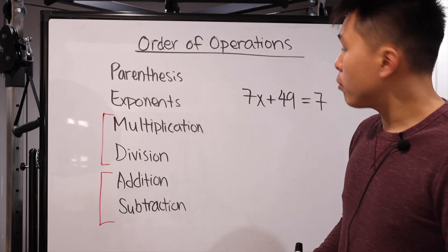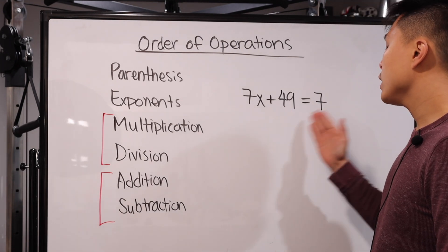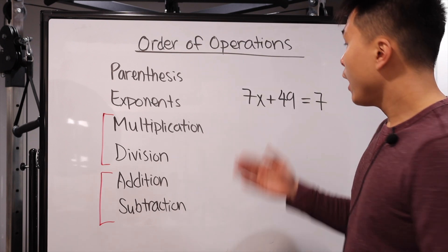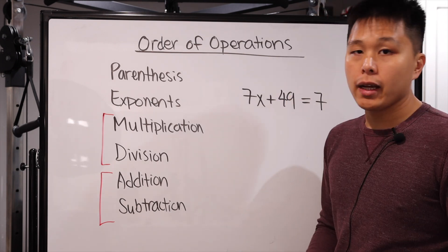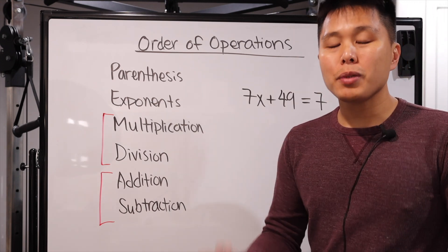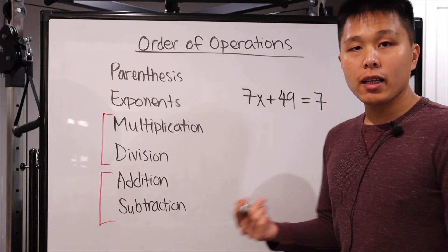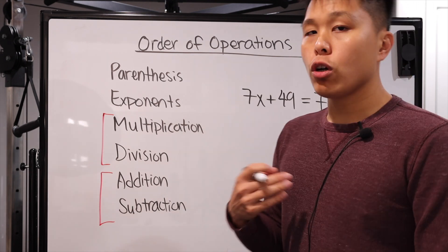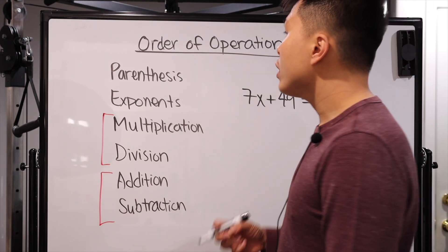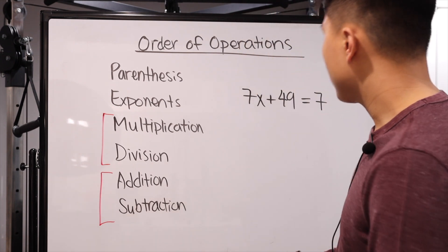You can manipulate certain expressions and equations in different ways that make your life a little easier. So for example, here's a standard problem that you can solve. Yes, the standard step, you can subtract 49 on both sides and then divide by 7 to get X. But you can always be creative. You can always manipulate things around. And in this case, as long as you're not breaking any rules, you don't really have to strictly follow the order of operations.